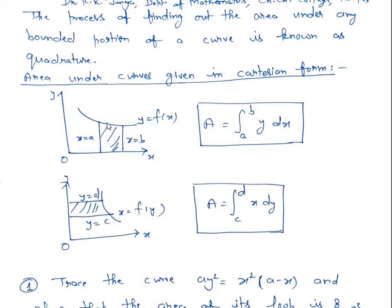Suppose y = f(x) is a curve and there are two lines x = a and x = b parallel to the y-axis. If you want to find the area bounded by y = f(x), x = a, x = b, and the x-axis, then this area is given by the integral from a to b of y dx.